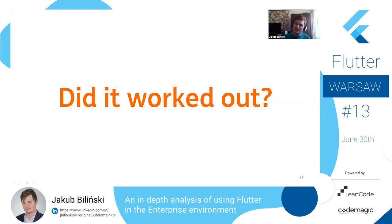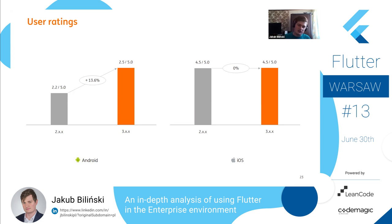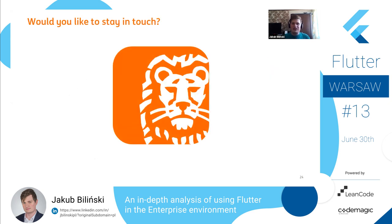Did our application change for the better? Yes, it did. Our user ratings on iOS didn't change much — it's still 4.5 out of 5. But on Android, in a really short period of time, we changed our score from 2.2 out of 5 to 2.5 out of 5. You might say that's not a big change, but remember we have a lot of negative opinions from our old application. Making that change takes time — we do get a lot of five-star ratings on the new application, but the legacy negative reviews still weigh on the score.